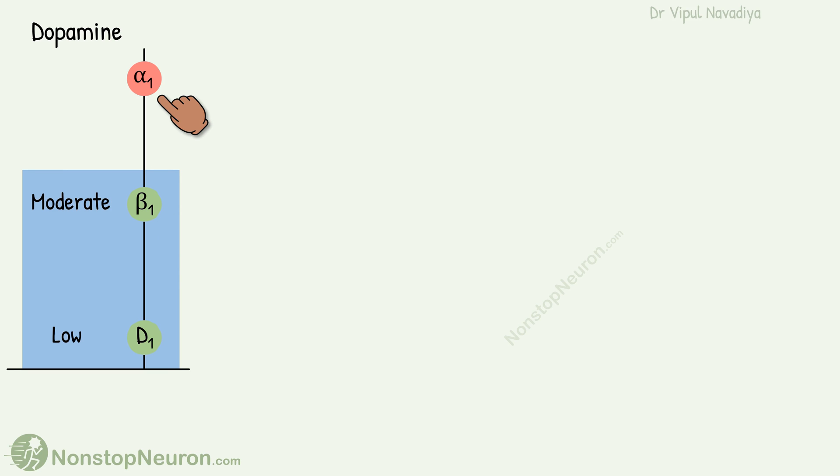Alpha-1 receptors are the least sensitive and require a higher concentration to get stimulated by dopamine. Because of this, dopamine produces different effects at different doses.